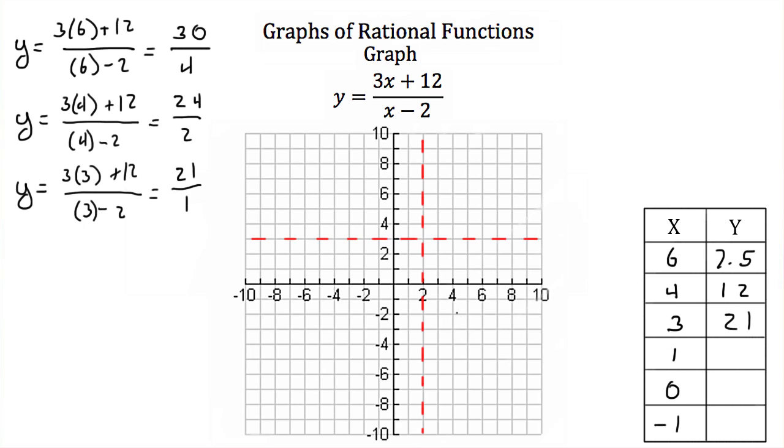Next I'm going to plug in 1 for x. I'll have y equals 3 times 1 plus 12 all over 1 minus 2. 3 times 1 is 3 plus 12 is 15. 1 minus 2 is negative 1. So when x is 1, our y is negative 15.